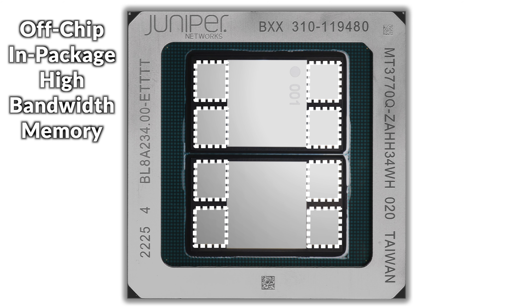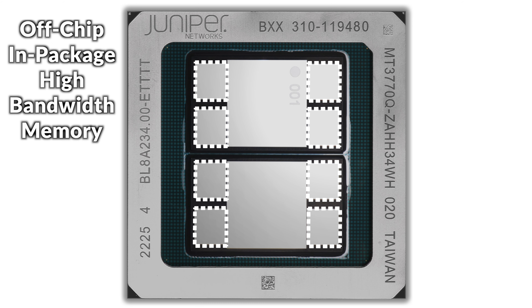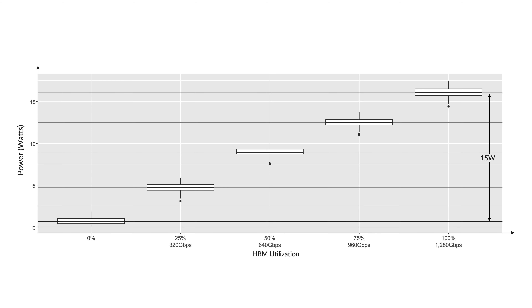Let's conclude on the PFE side with one last component: the external buffer. Like every other part it consumes energy, directly dependent on the traffic it needs to handle to store packets. In this PTX example with an Express 4 chipset, we notice a difference of 15 watts between no traffic going through the HBM interface and 100% of bandwidth to memory being occupied.